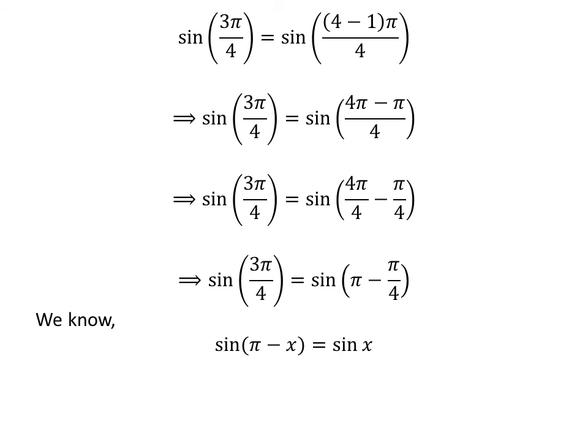We know the famous trigonometry identity: sine of pi minus x is equal to sine of x. The proof of the identity has been explained in the video appearing in the upper right corner of this video. The link of the video is also given in the description section. Application of the above identity gives us sine of 3 times pi upon 4 is equal to sine of pi upon 4.